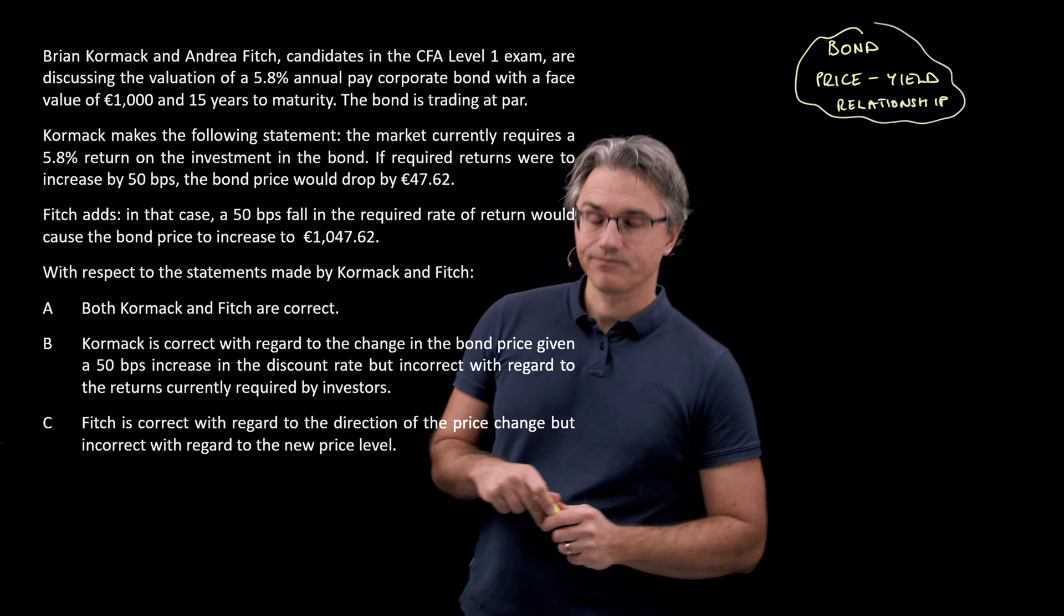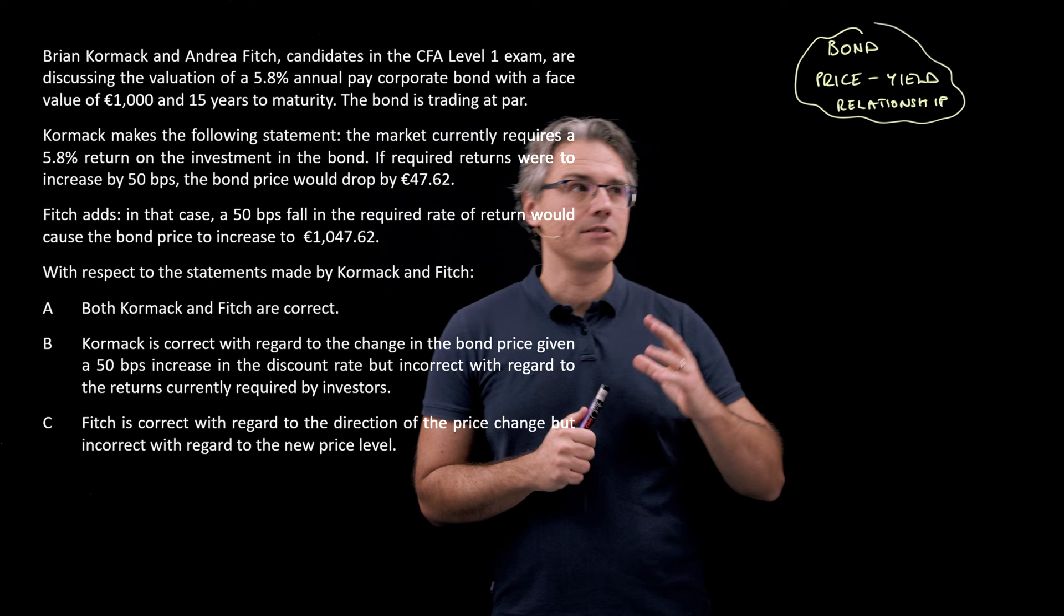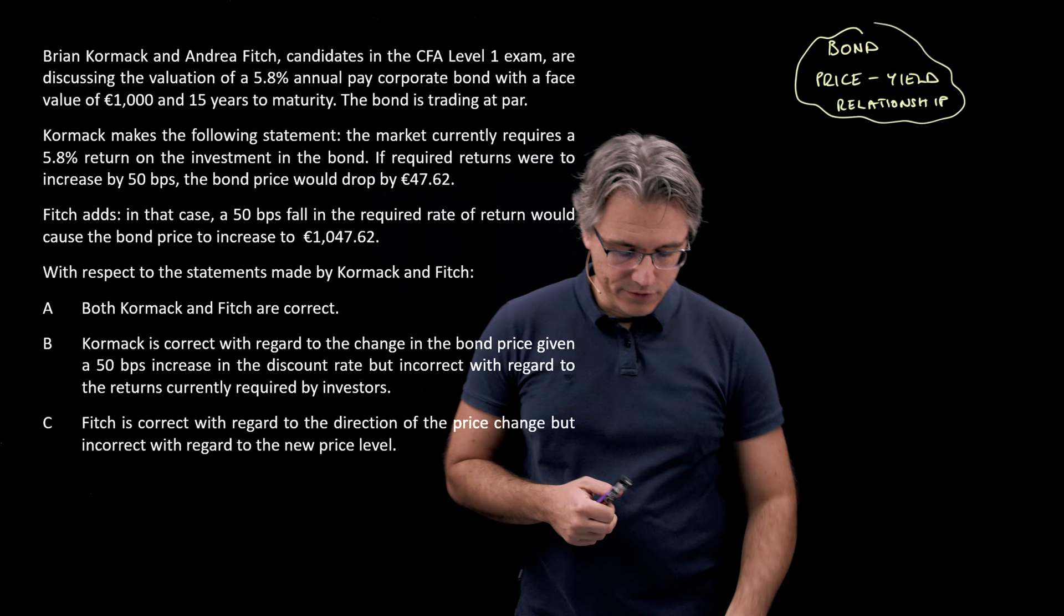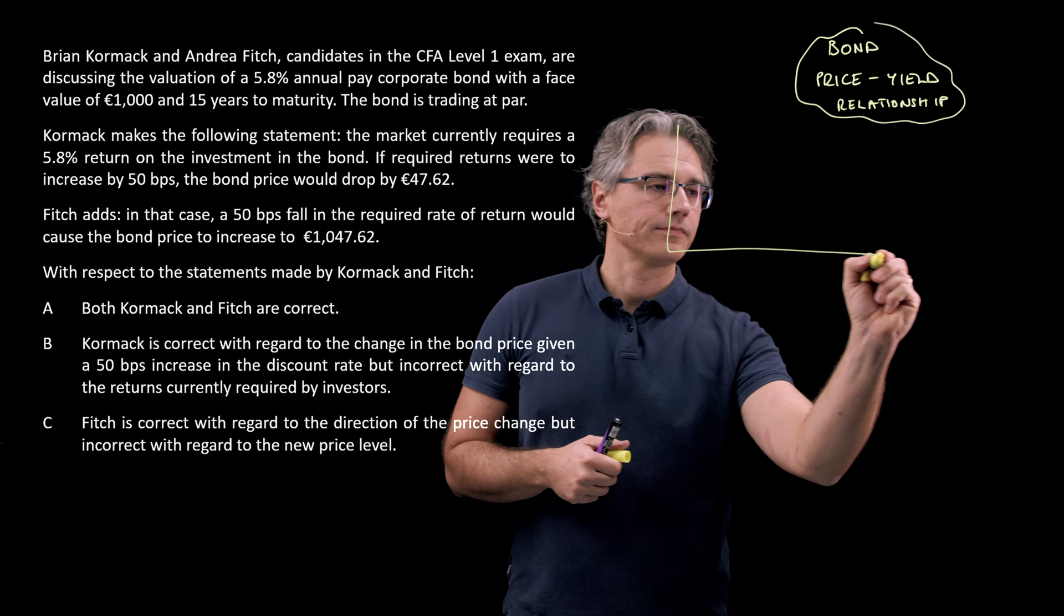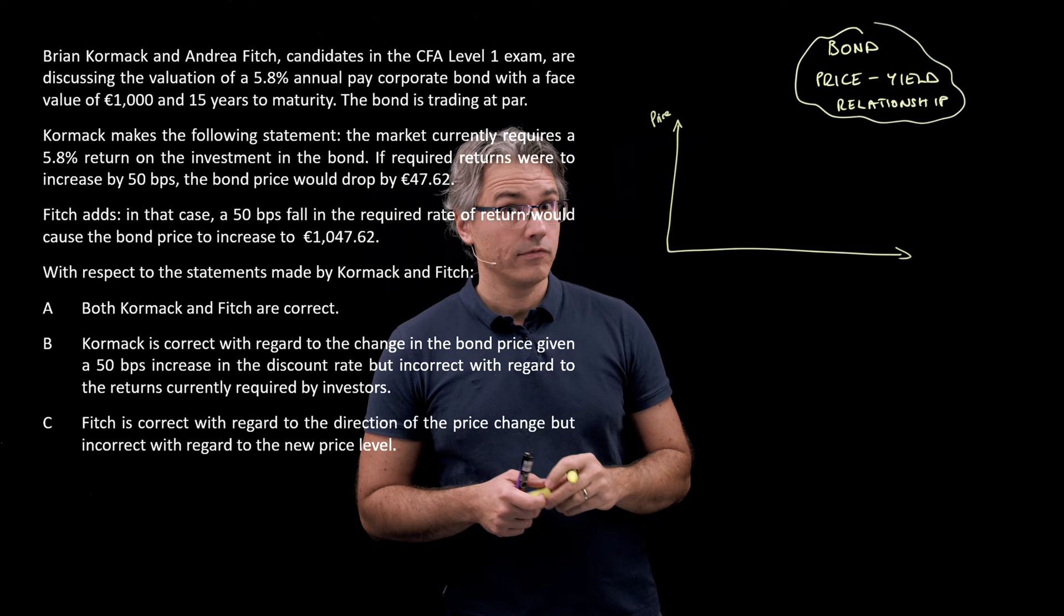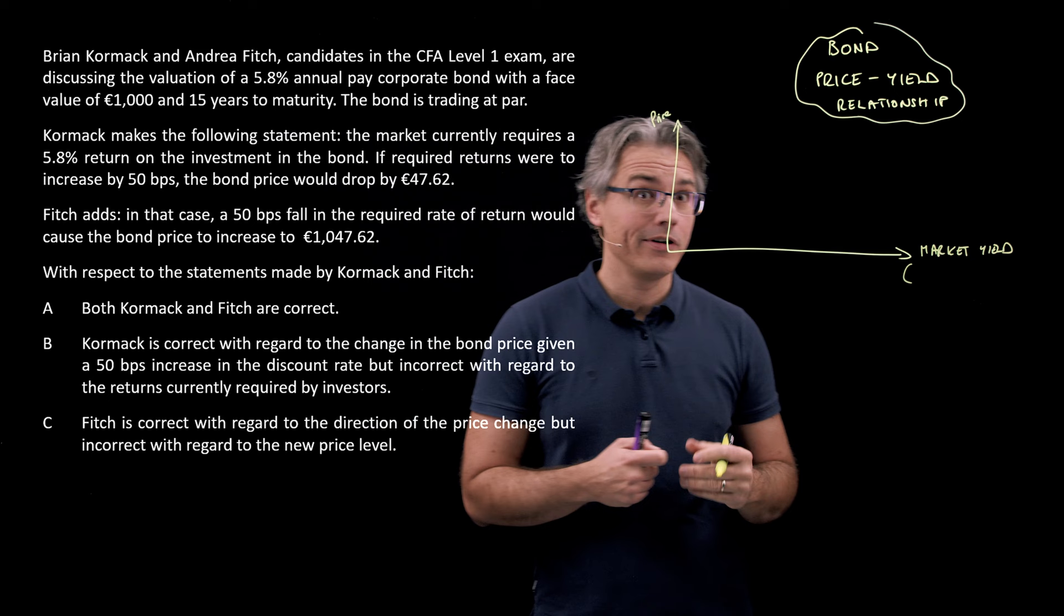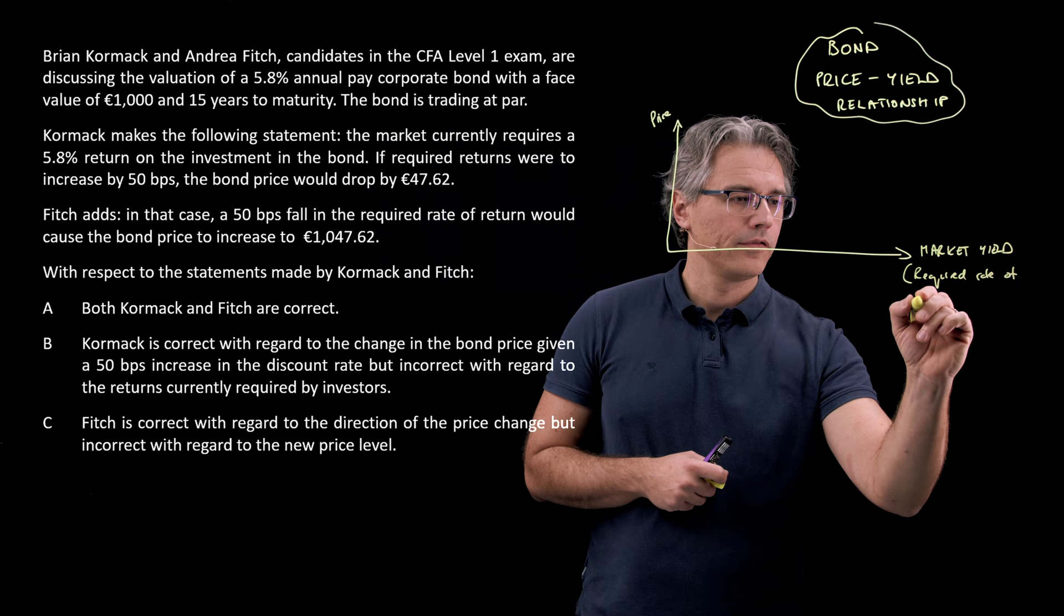Now, this question is relatively easy but it touches on a very fundamental concept and that's the relationship between price and yield. So what I'm going to do first is draw a graph which is often used to depict the relationship that I'm talking about here. On the vertical axis, I'm going to have the price of a bond, and over here on the horizontal axis, I'm going to have the yield, the market yield, meaning the level of rate or yield required by investors. So, required rate of return, obviously as required by the market or by investors.